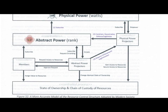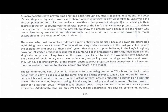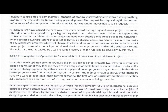The last enumerated control action is 'request enforcement legitimization.' This is another tacit control action that is easy to explain using the same king and knight example. When a king orders his army to carry out his will, what he is really doing is asking physical power projectors to legitimize his abstract power. The same thing happens during virtually any form of physical enforcement. Physical power is superior to abstract power, which means physical power projectors are superior to abstract power projectors. Additionally, laws are only imaginary logical constraints, not physical constraints. Because imaginary constraints are demonstrably incapable of physically preventing anyone from doing anything, laws must be physically legitimized using physical power. The request for physical legitimization and enforcement of abstract power is therefore implicit, not explicit, but nevertheless still a request.